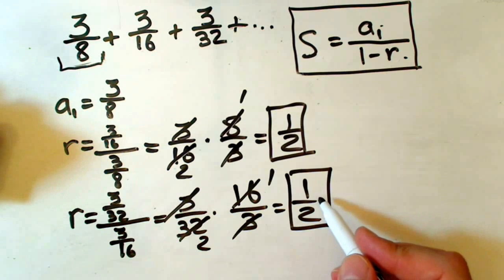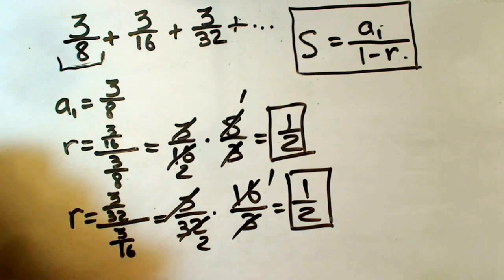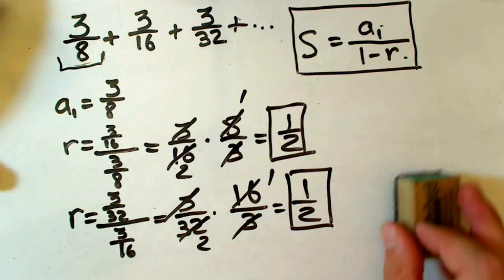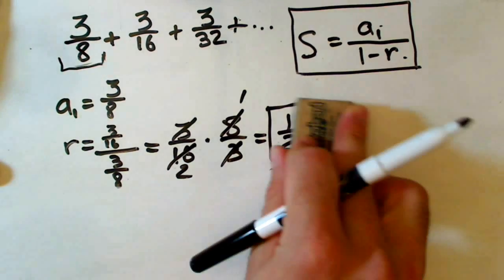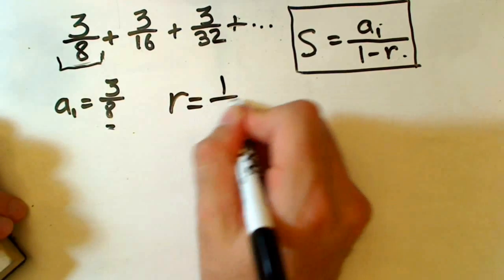Our common ratio is actually less than 1, which means that the sum exists. Okay, now our ratio equals 1 half. Just plug into our formula and we are done.